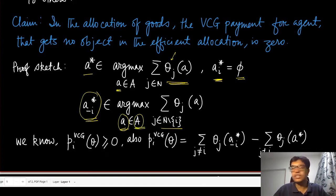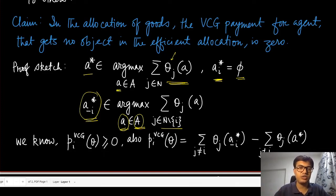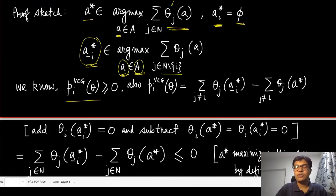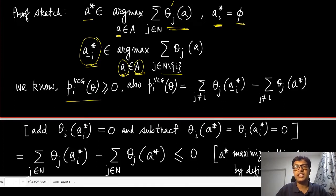The allocations still fall in the same set A, and we denote the allocation excluding agent i simply by setting the i-th component to null. We have already seen that the VCG payment is always non-negative, as argued in the previous module. Now we show the other direction: that pi_VCG is also non-positive in the specific case where agent i's allocation is null in the efficient allocation.